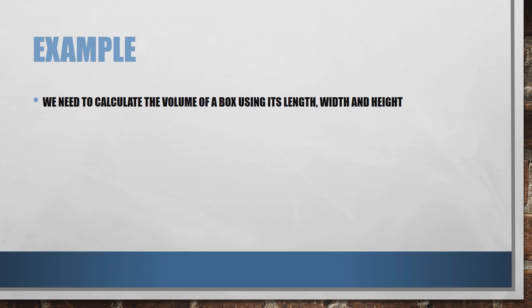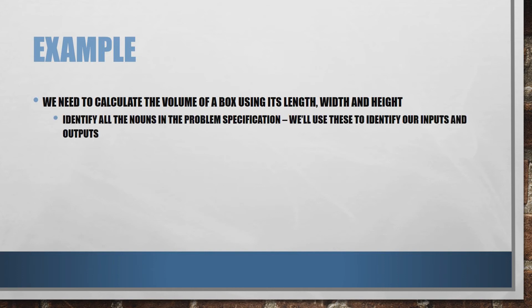So let's take an example of that. We've got a box and we want to calculate the volume of a box. All we know about it are its length, its width and its height. This is something you probably recognize from your maths lessons. The first step towards applying our input process output model to this problem is identifying all the nouns in our problem specification. And we use these nouns to identify what our inputs and outputs are.